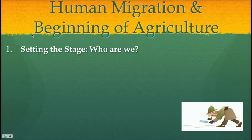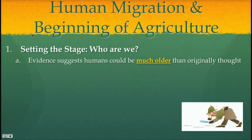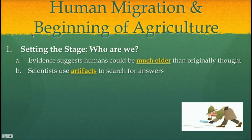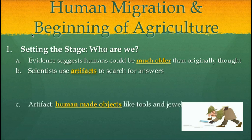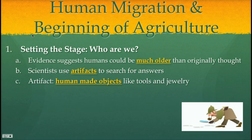Let's set the stage. Who are we? We want to figure out who early humans are because it can tell us a lot about who we are today as a species. Evidence suggests humans could be much older than originally thought, and we're going to look at a couple of pieces of evidence that really shook up the scientific community when they were dated. Scientists and historians use artifacts to search for answers. An artifact is a human-made object like tools and jewelry. If you're uncovering a site where somebody lived — maybe decades ago, hundreds of years ago, or even thousands of years ago — you're going to look at the things they left us. That might be bones — we can learn a lot from fossil records — but we can also learn a lot from the actual pieces that people made and used in their everyday life, and that can tell us a lot about who they are. So artifacts become a really big deal.